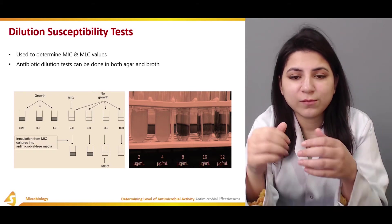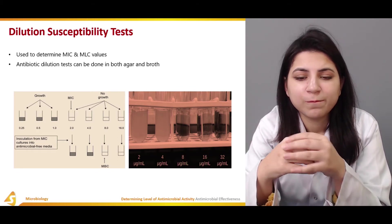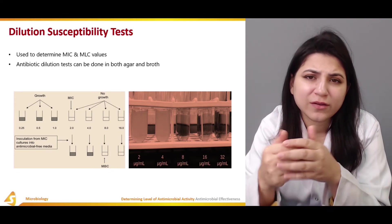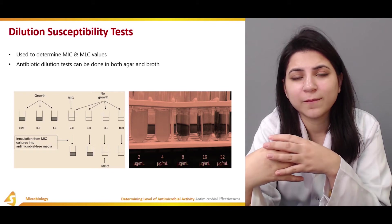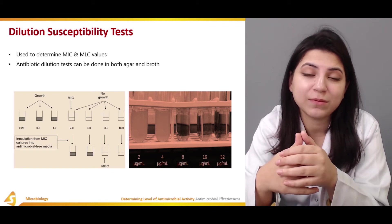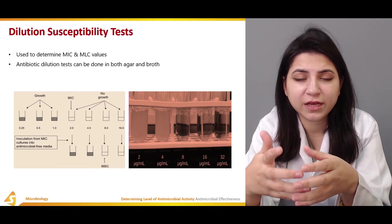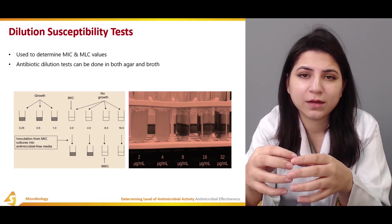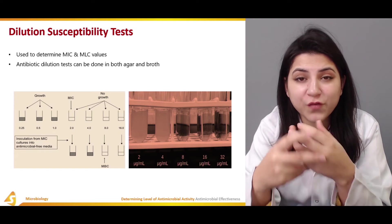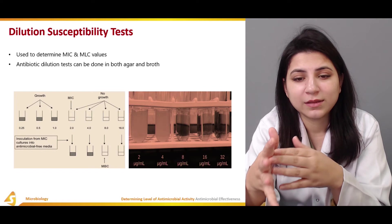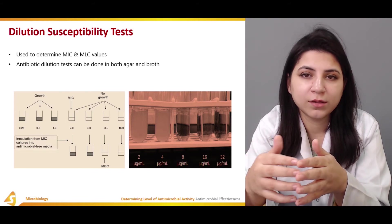We then inoculate from the MIC cultures into antimicrobial-free medium to check for bacterial growth. Usually there is bacterial growth because the MIC (minimum inhibitory concentration) stops growth but does not entirely kill the pathogens. To determine the minimum bacteriostatic concentration, we take an inoculum from the MIC and plate it in a broth free of any antimicrobial agent to observe whether growth occurs and beyond which point growth is stopped.